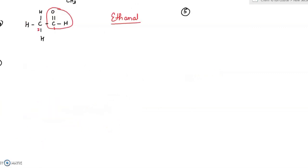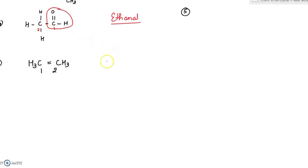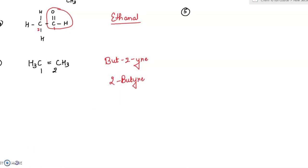Fifth question: two carbon atoms with a CHO group — that is an aldehyde, so the answer is ethanal. The next compound contains a triple bond, so you can also write 2-butyne.